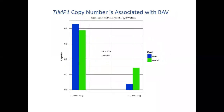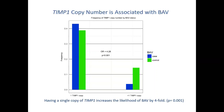We first showed that TMP1 copy number alone in Turner syndrome is associated with BAV. If you have only one copy of TMP1, you are more likely to have a bicuspid valve. Individuals who are mosaic or have only partial deletion of the second sex chromosome — giving them more than one copy of TMP1 — are more likely to not have a BAV. That corresponds to an odds ratio of four, meaning a single copy of TMP1 increases the likelihood of BAV about fourfold.